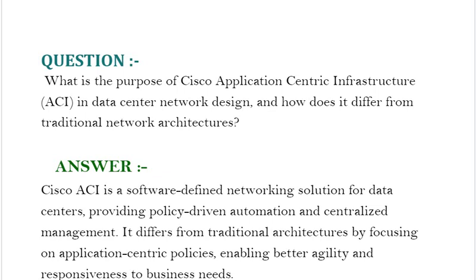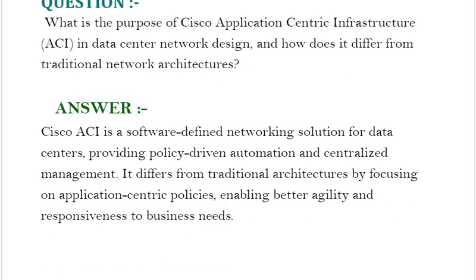The next interview question is: what is the purpose of Cisco Application-Centric Infrastructure, ACI, in data center network design, and how does it differ from traditional network architectures? Your answer should be: Cisco ACI is a software-defined networking solution for data centers providing policy-driven automation and centralized management. It differs from traditional architectures by focusing on application-centric policies, enabling better agility and responsiveness to business needs.